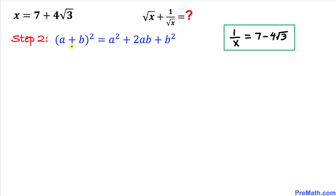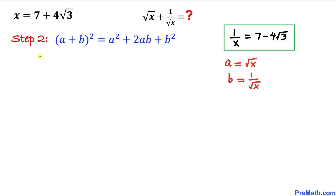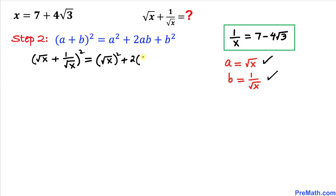Here's our next step. Let's recall the famous identity: (a + b)² equals a² plus 2ab plus b². If we replace a by square root of x and b by 1 divided by square root of x, then our equation becomes (square root of x plus 1 divided by square root of x)² equals (square root of x)² plus 2 times square root of x times 1 divided by square root of x, plus (1 divided by square root of x)².